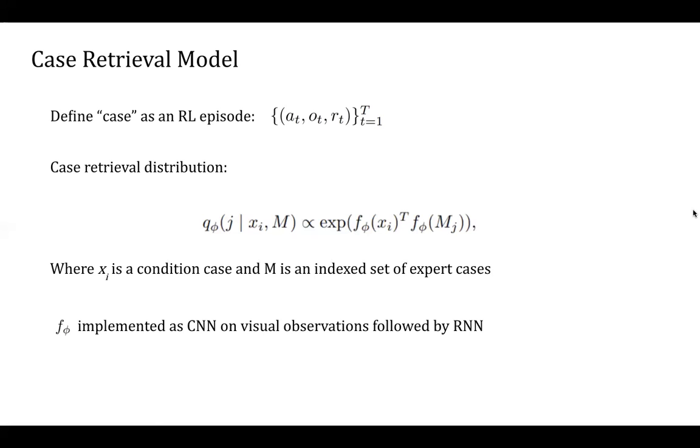The retrieval model works as follows. The model retrieves each expert case with probability proportional to the exponential of the dot product between two embeddings. These embeddings are outputs of neural network, given condition and expert cases. Such formulation allows the model to build a meaningful latent state describing the behavior.